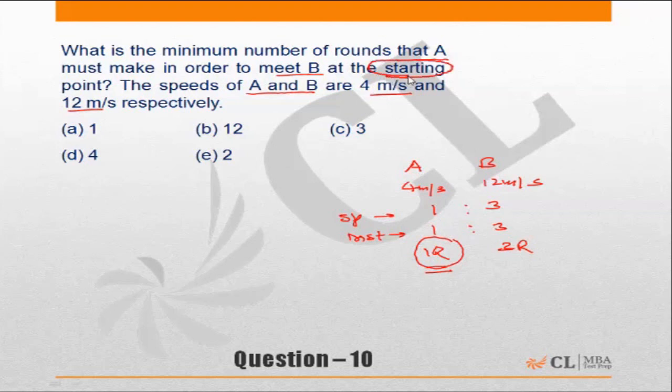Because the question says when will they meet at the starting point, they will meet after one round of A. If the question was how many rounds of B for them to meet at the starting point for the first time, it would have been 3.